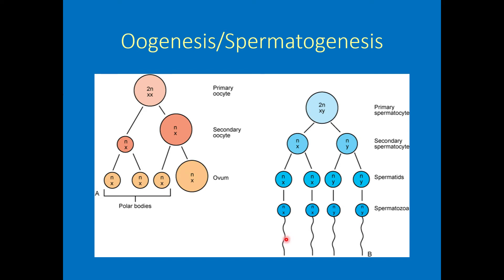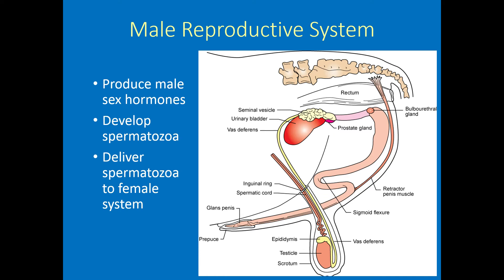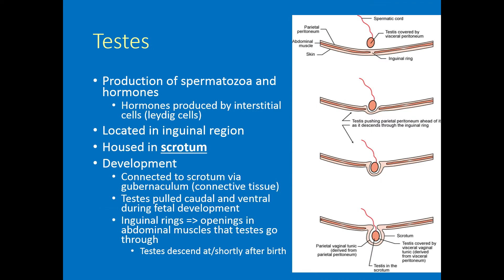Having covered spermatogenesis and oogenesis, let's talk about structures and functions of these systems. Here's a schematic of the male reproductive system. Three main functions: produce hormones — which control everything including spermatogenesis — produce spermatozoa for breeding and fertilization, and deliver those spermatozoa to the female during breeding. The testes are where spermatogenesis occurs and hormones are produced, with Leydig cells producing androgens.